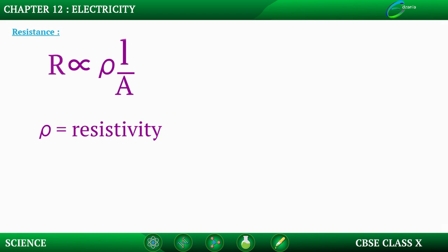Rho is a characteristic property of the material used. It is different from one material to the other material. SI unit of rho will be ohm meter.